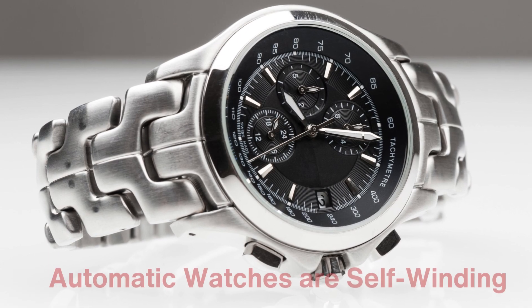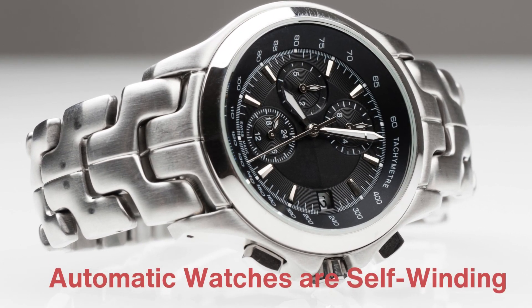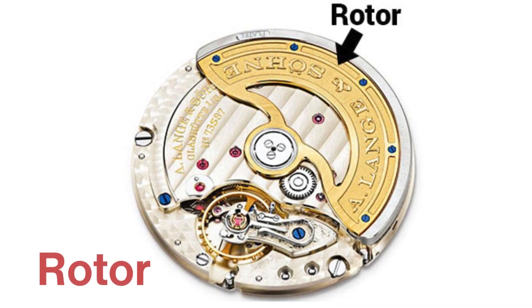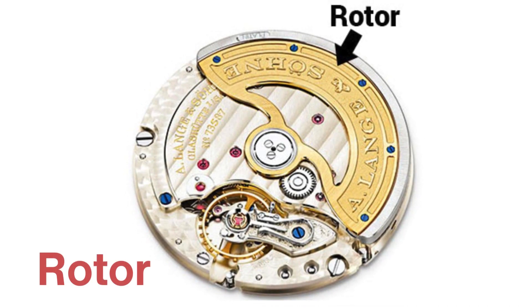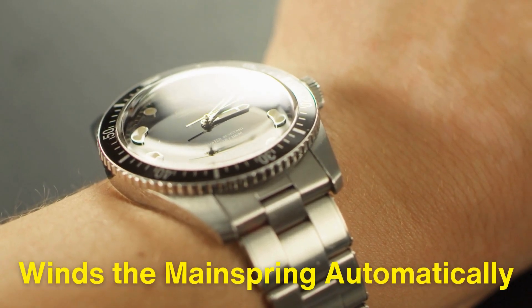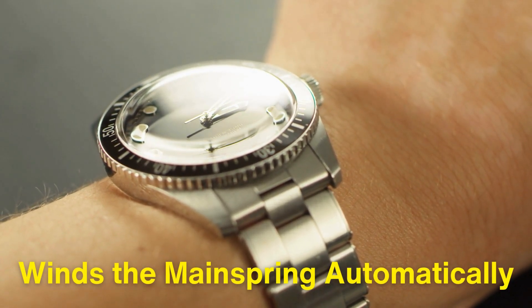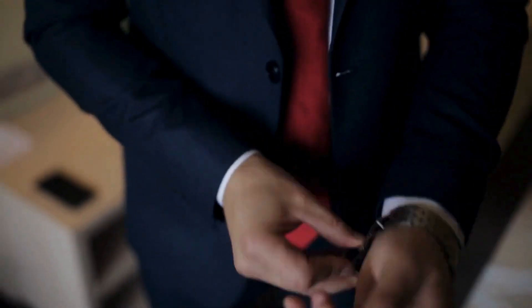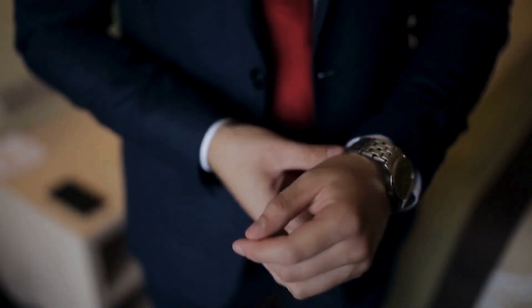On the other hand, automatic watches are self-winding. They have an additional component called a rotor, which is a weighted piece of metal that swings as you move your wrist. The motion of the rotor winds the mainspring automatically, so you don't have to manually wind the watch every day. As long as you wear the watch regularly, it will keep running without any manual intervention.